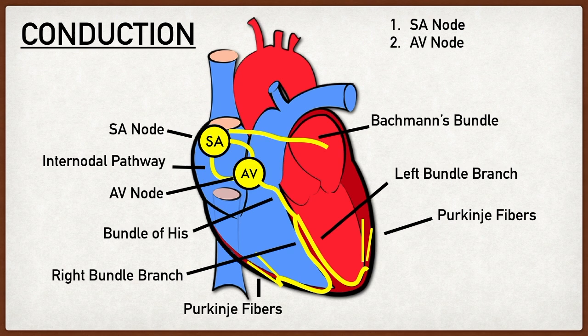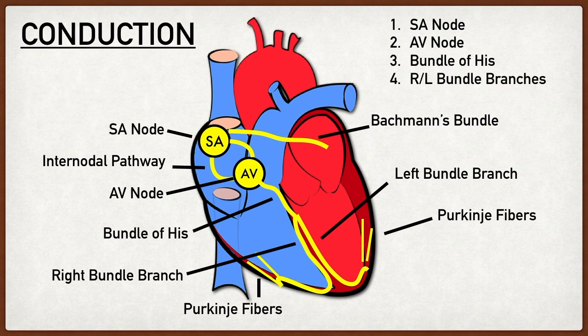The action potential then converged on the AV node, which sits at the base of the right atrium near the intraventricular septum. It acts as the gatekeeper sending the action potential from the atria to the ventricles, and slows conduction velocity to allow time for the atria to contract before the ventricles. The action potential then exited the AV node and entered the bundle of His, followed by the right and left bundle branches and Purkinje fibers, leading to ventricular depolarization and contraction.